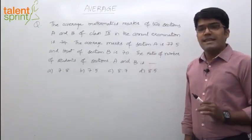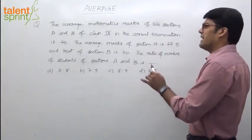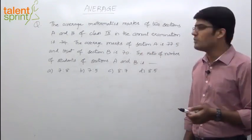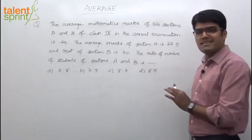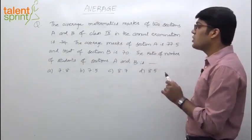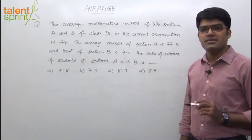The average mathematics marks of two sections A and B of class 9 in an annual examination is 74. The average marks of section A is 77.5 and that of section B is 70. Find the ratio of number of students of section A and section B.